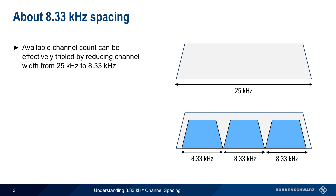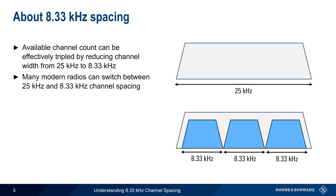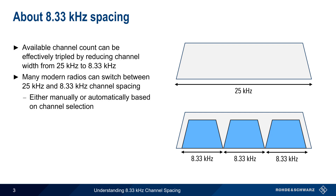Although this requires changes in both transmitting and receiving equipment, many modern aeronautical radios can switch between 25 kHz and 8.33 kHz, either manually or automatically based on the selected channel.